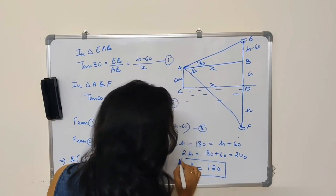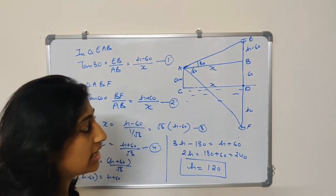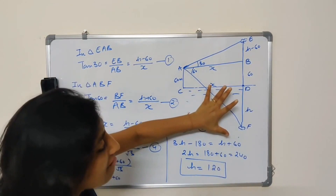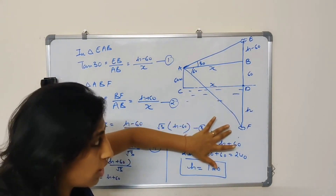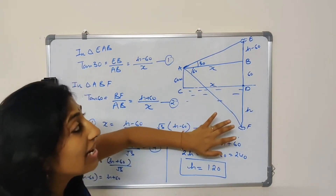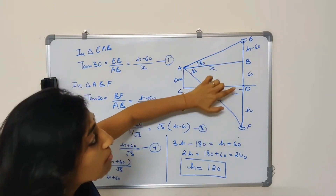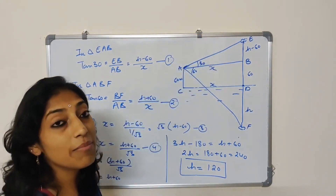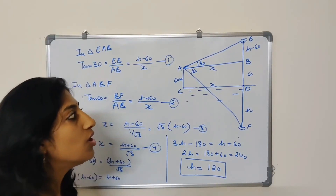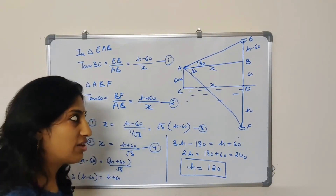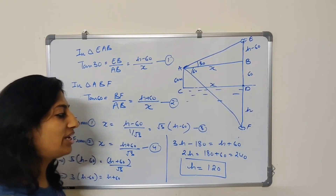So what was H? I considered H as DF — the depth of the reflection of the cloud inside the surface of water — and the distance of the cloud from the surface of water will be the same as H only. So our distance of the cloud from the surface of water is 120 metres.